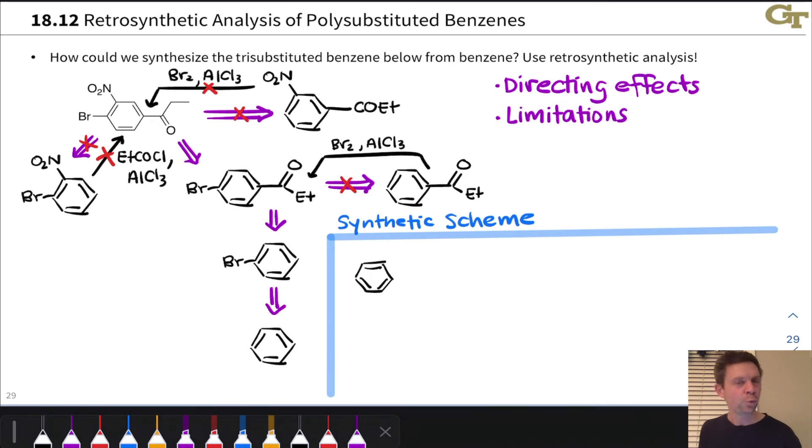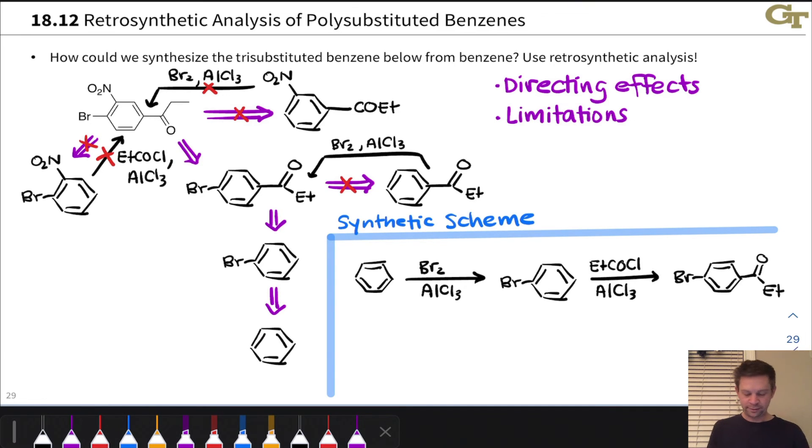So let's do that now. We start with benzene. And the first step is bromination to give us bromobenzene, Br2, AlCl3, bromobenzene. Next up, we're going to do Friedel-Crafts acylation of bromobenzene with the acyl chloride here, ethanoyl, or rather propanoyl chloride, I should say, in AlCl3. That gives us this compound here.